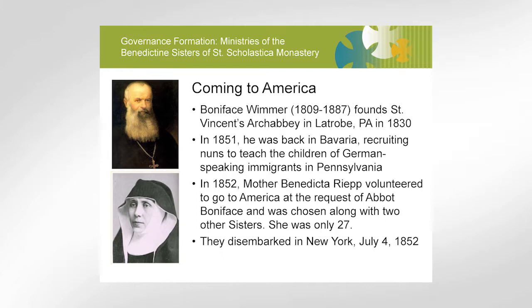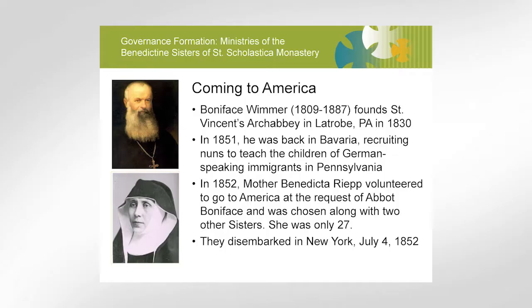Boniface Wimmer was the person who really started all of that. He was a monk at Metten Abbey — the men's counterpart of St. Walburga's — and he really wanted to go to the New World and help the German immigrants. He founded St. Vincent's Arch Abbey in La Trobe, Pennsylvania, then came back to recruit help. Mother Benedicta Reap agreed to go back with him, along with two other sisters. They came in 1852, landing on July 4th in New York. She was only 27 years old at the time.